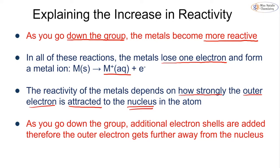So as you go down the group, we are adding more and more electron shells to our atoms. And the more and more electron shells that we add, that causes the outer electron to be further away from the nucleus.